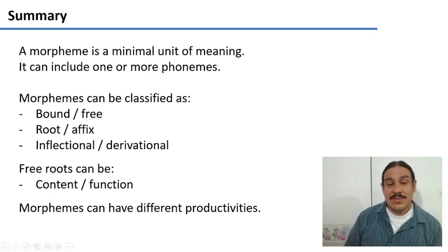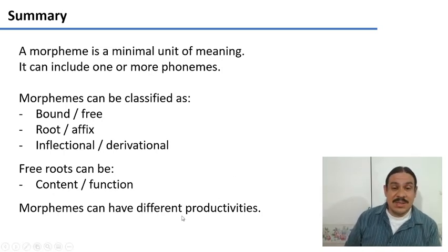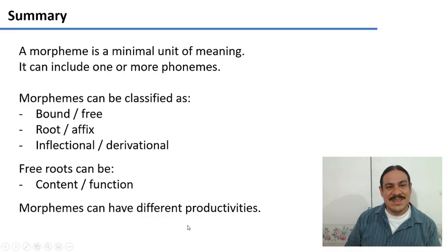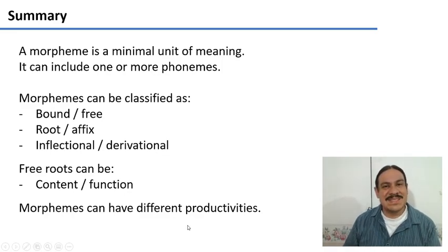So that was a quick intro to morphology. A morpheme is a minimal unit of meaning, built of one or more phonemes, and words can have one or more morphemes. Morphemes can be bound or free — free if they can stand on their own as a word. They can be roots or affixes: the root is the main meaning, and the affix adds some additional meaning. They can be inflectional, adding grammatical meaning, or derivational, changing the meaning. Free roots can be content words with a lot of meaning, like 'cat' and 'dog,' or function words serving grammatical roles, like 'for' and 'at.' And morphemes can be very productive or very unproductive. In the next video, we'll focus on affixes.